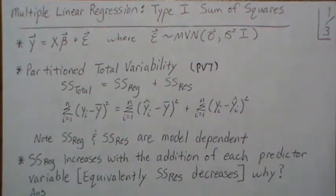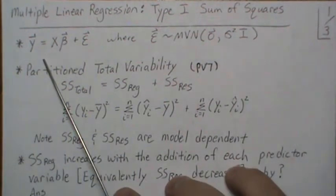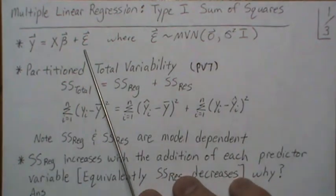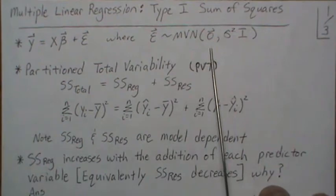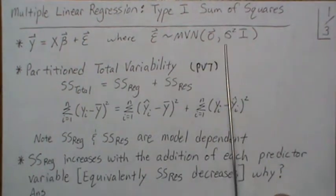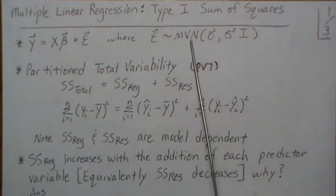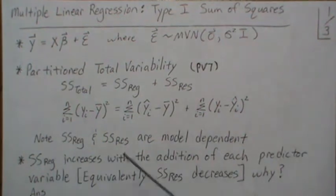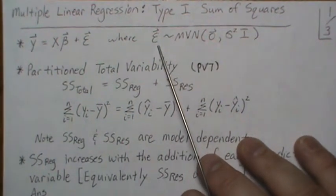Hello. In this video we're in the multiple linear regression setting and we're going to talk about the Type 1 sum of squares. As a reminder, this is our model y equals x beta plus epsilon, where epsilon is multivariate normal with mean vector zero and variance-covariance matrix sigma squared I. Normally we don't have to assume a distribution, but we're going to find distributions of certain quadratic forms and that requires us to have this assumption.